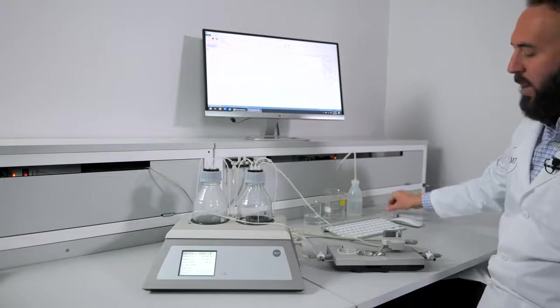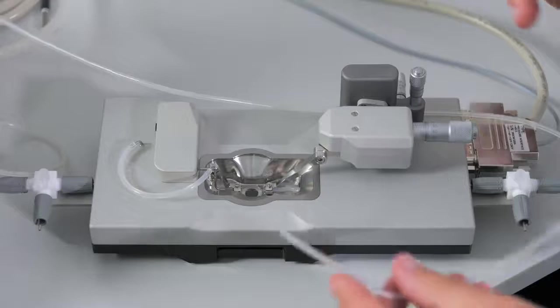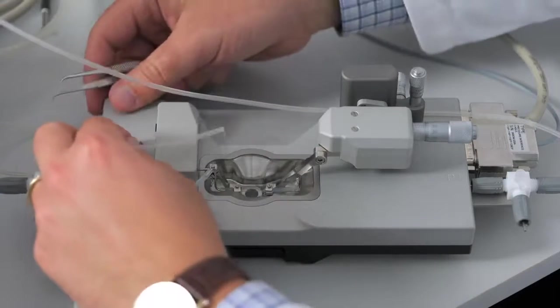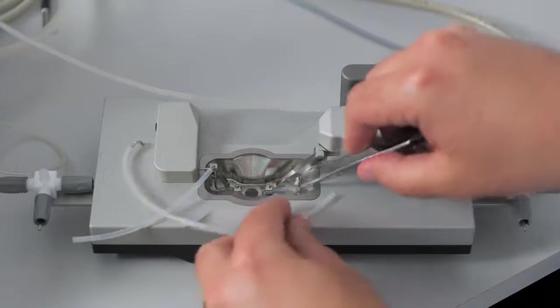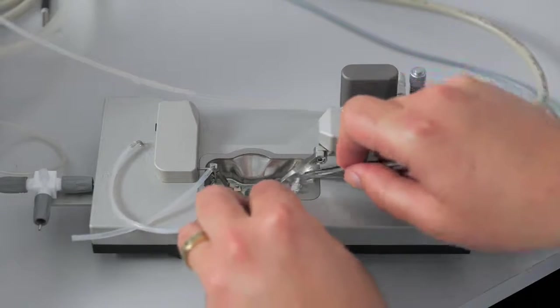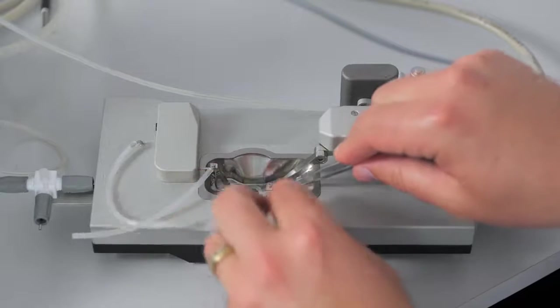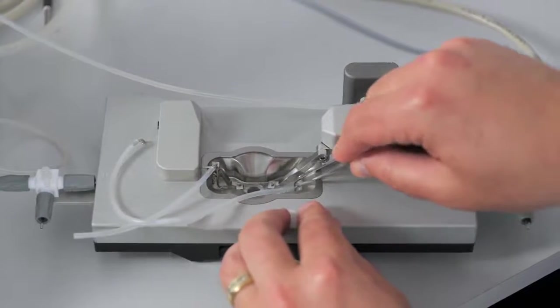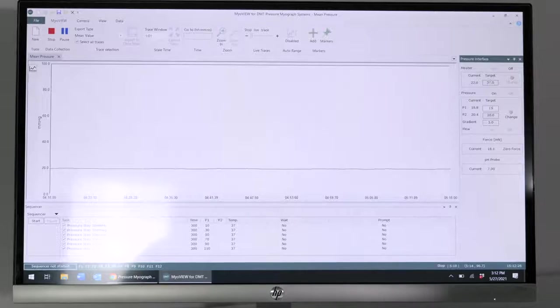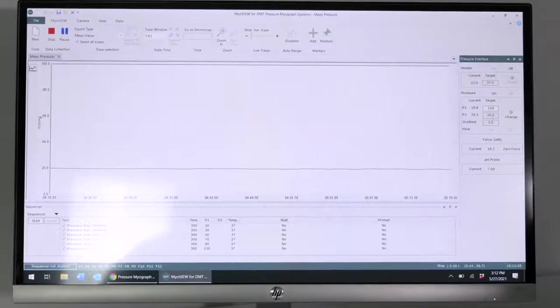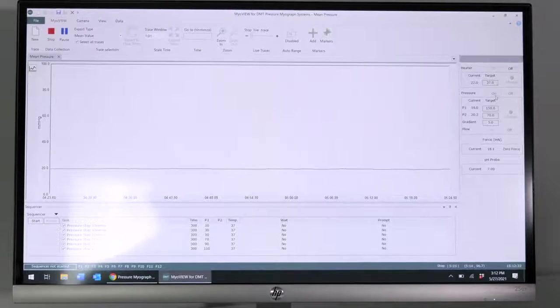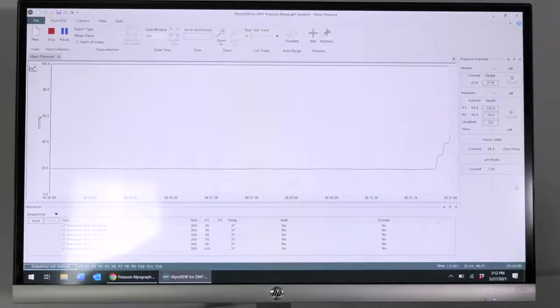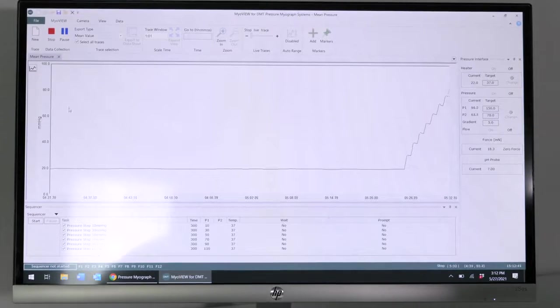Secure the bottle cap and place the calibration shunt on the chamber. You should then change your pressures for P1 to 150 and P2 to 70. Turn on pressure and make sure that flow is on, which will then push all of the buffer into the P2 waste bottle.